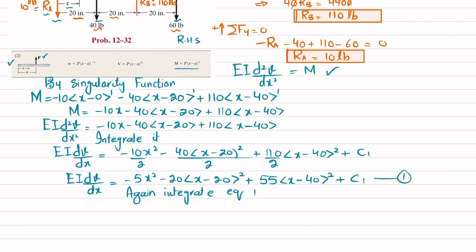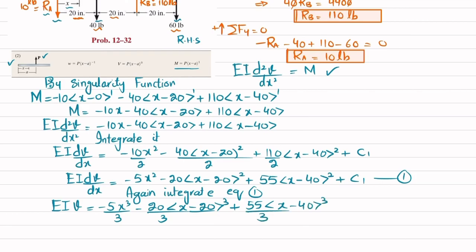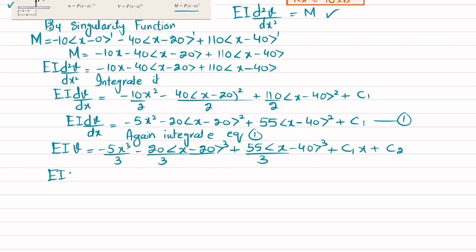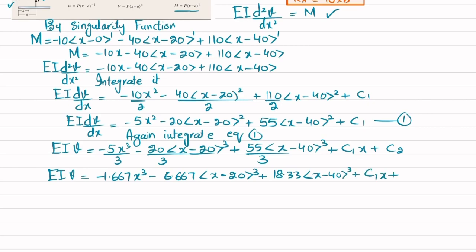Integrating again, EI·v equals minus 5x³/3 minus 20·⟨x − 20⟩³/3 plus 55·⟨x − 40⟩³/3 plus C1·x plus C2. Simplifying the coefficients, this becomes: EI·v equals minus 1.667x³ minus 6.667·⟨x − 20⟩³ plus 18.33·⟨x − 40⟩³ plus C1·x plus C2. This is equation number two. Constants C1 and C2 are unknown constants of integration.